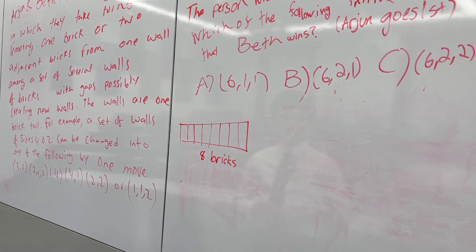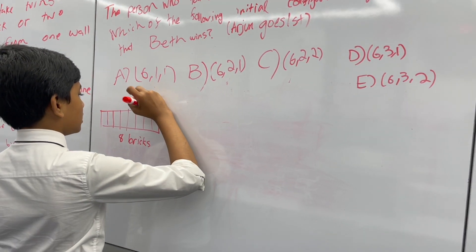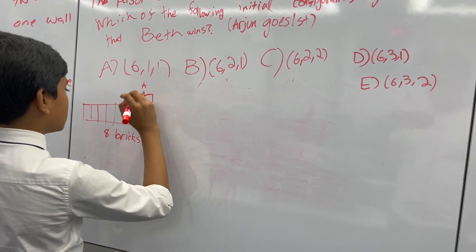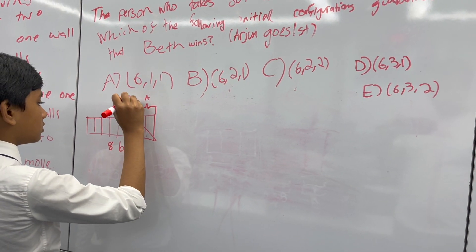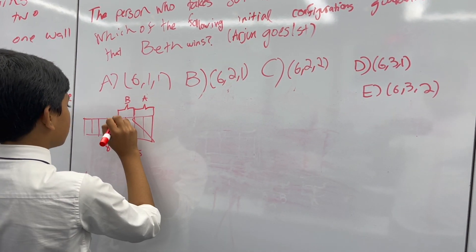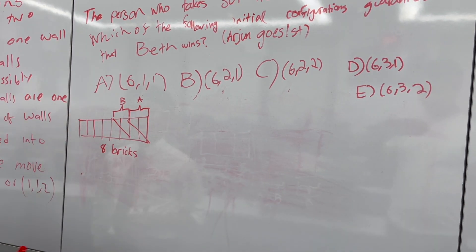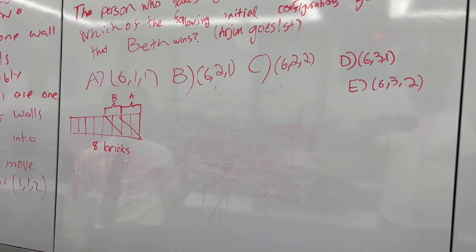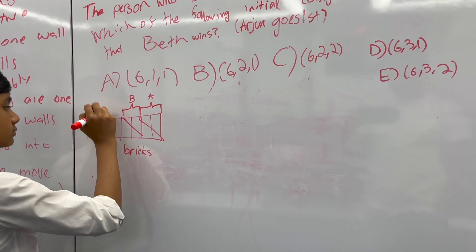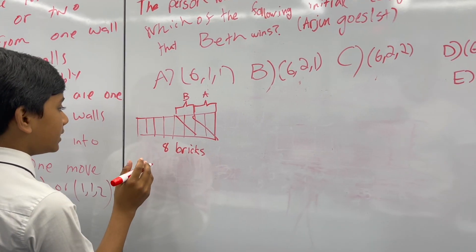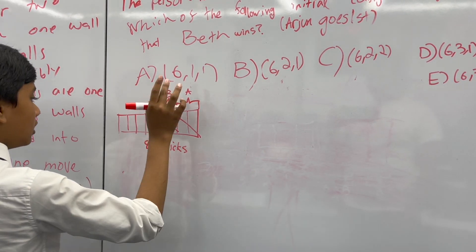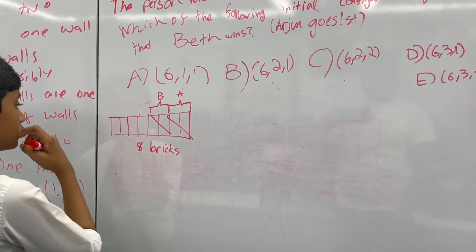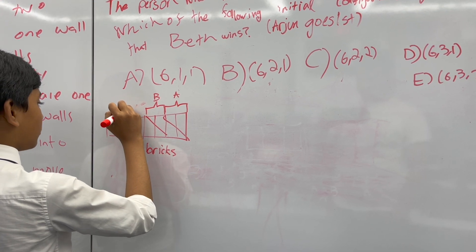Let's see what Arjun can do. Arjun goes first. Let's say he takes out two bricks. Then Beth goes next. She's going to take out two bricks as well. Then what is Arjun going to do? Arjun can take out this brick right here.